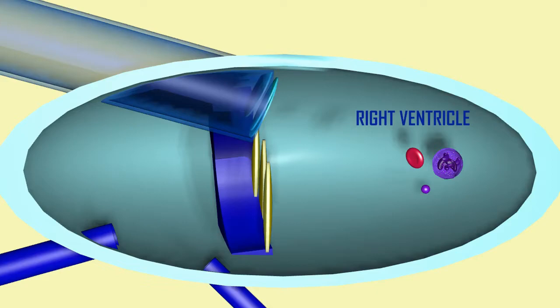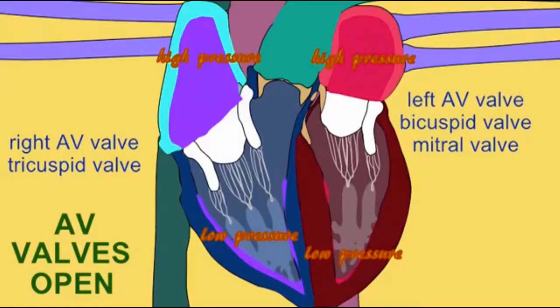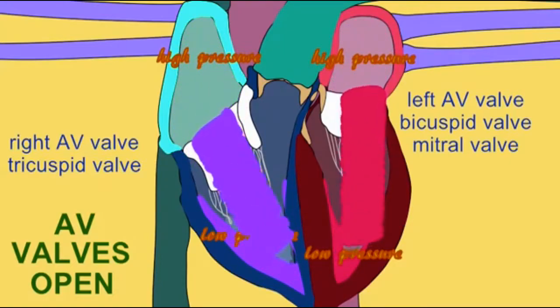Now, up until this point in the cardiac cycle, the right ventricle has had low pressure because the muscle in the walls of the right ventricle, in the myocardium, this muscle has not been contracting.